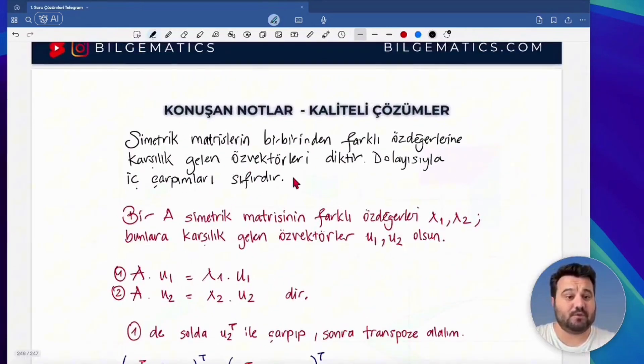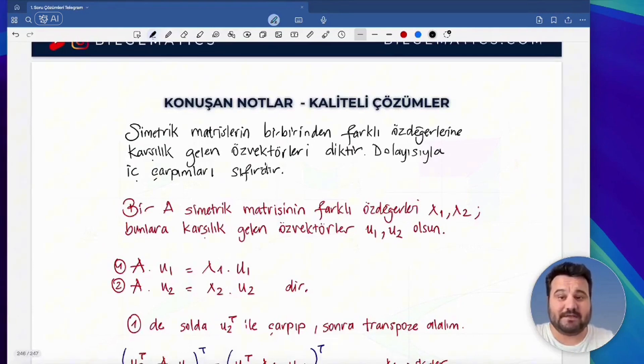So, friends, when you do this operation, something like this comes out. What is our situation? The eigenvectors corresponding to the distinct eigenvalues of symmetric matrices are already orthogonal. Therefore, their inner product is zero. I repeat. The eigenvectors corresponding to different eigenvalues of symmetric matrices are orthogonal. When you perform the operation, it leads you to this. Later, we will also provide a simple proof.